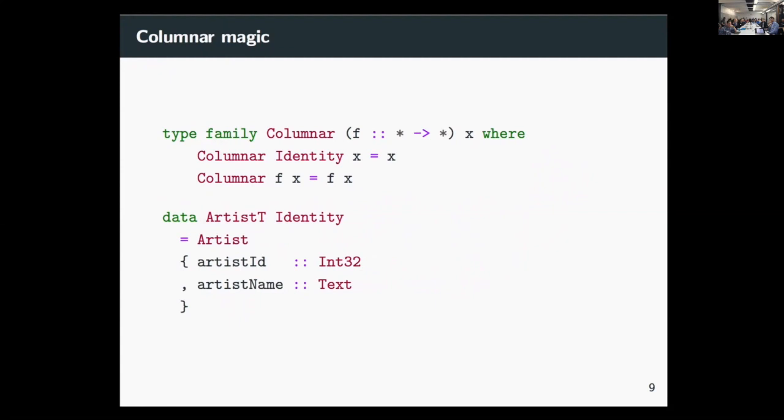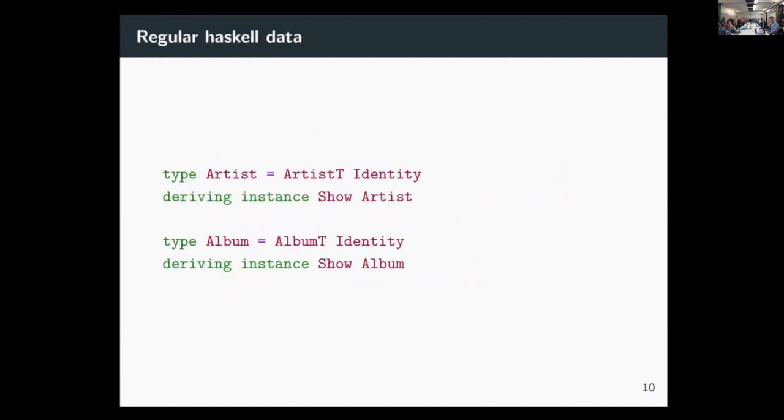And so if you take a look at what happens when you parametrize artists by identity, then we substitute f everywhere. However, because of the type equivalence here, when we actually want to use this, we can treat it as if artist ID and artist name look like that, which is your normal Haskell type. And in fact, I take the convention where I prefix or suffix all my beam types by T for table. And then I just define these type synonym instances here, artists and album. And you can use them just like regular Haskell types and it works out as you'd expect.